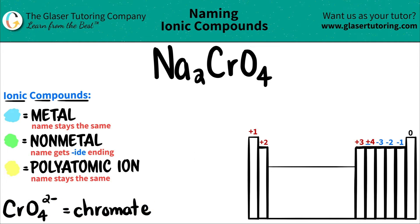CrO4 is a polyatomic ion. It has multiple atoms or elements that have a single charge. CrO4 has a negative two charge, and it's always called chromate. I can identify that the polyatomic is right here — here's CrO4.